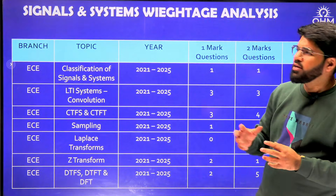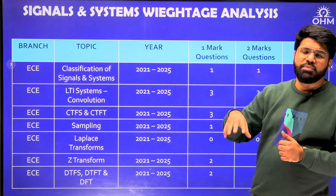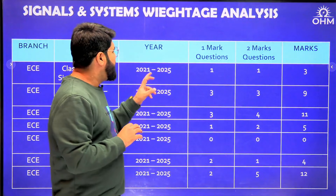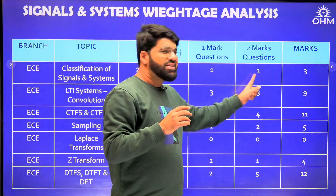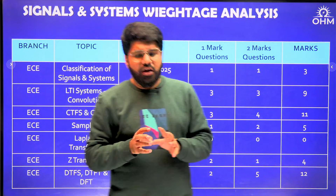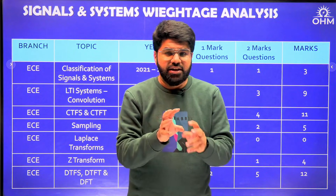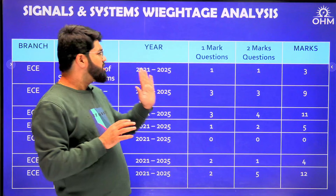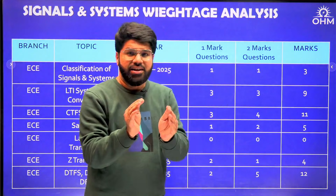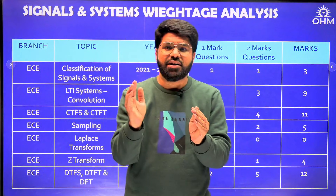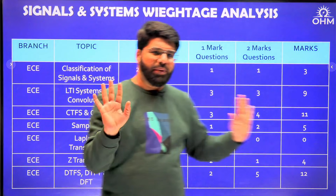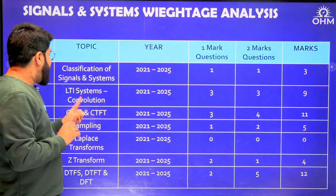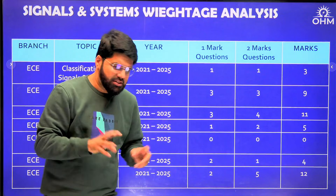Classification of signals and systems — topics like periodic signals, energy signals, power signals, and classification of systems like linear, time-invariant, causal, stable, and invertible systems — have been clubbed together. For EC, only two questions: one of one mark and one of two marks. Foundation topics like standard signals — step, ramp, and impulse — are very important to understand. Where questions are fewer, still study the basics, but practice a decent number of questions and that will be enough. Total three marks overall.